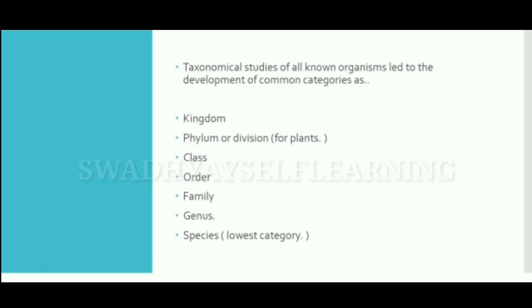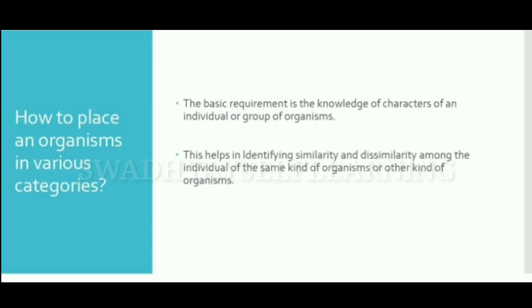Taxonomical studies of all known organisms led to the development of common categories: kingdom, phylum, class, order, family, genus, and species. Species is the lowest category. The question now is how to place an organism in various categories.